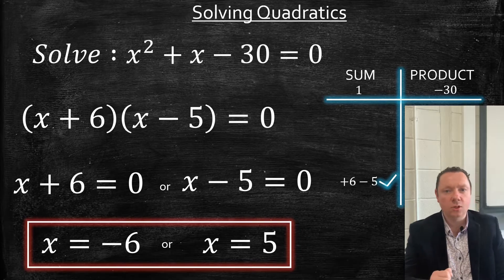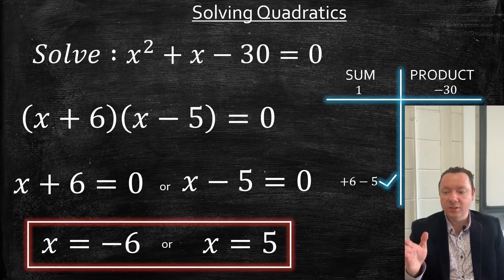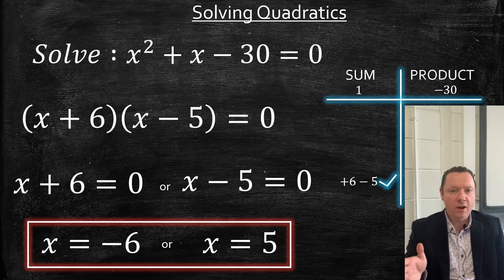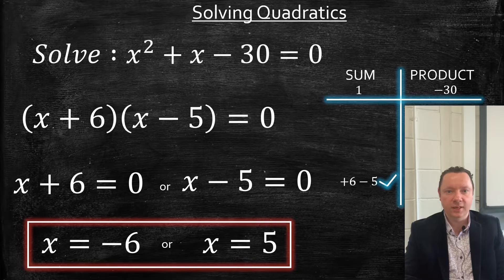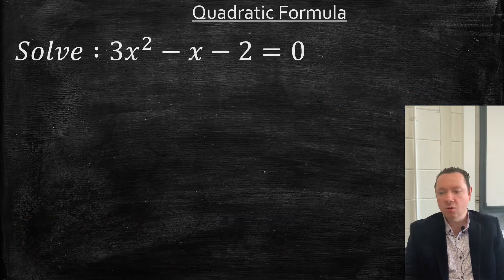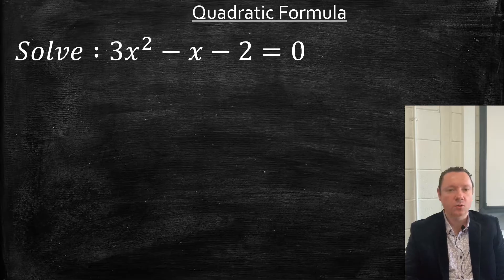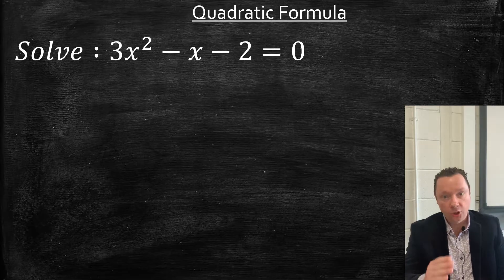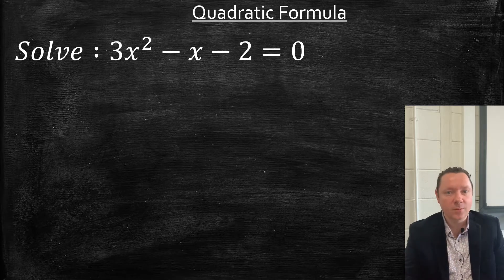That's the last example on factorising. We could obviously ask one where there's a number in front of x squared — if you need to check how to factorise with numbers in front of x squared, go back to the factorising video. It's the same procedure: factorise, then solve. So we've got 3x squared minus x minus 2 equals 0, and I know this is a quadratic formula question. You'll know because it will say leave your answer to so many decimal places, or it's the calculator paper.